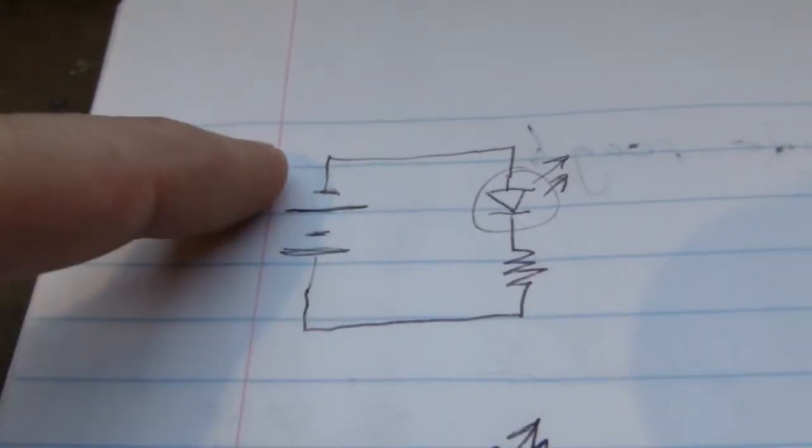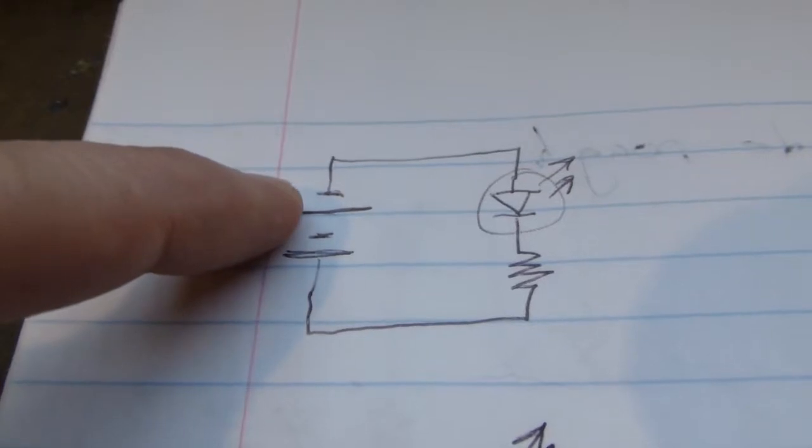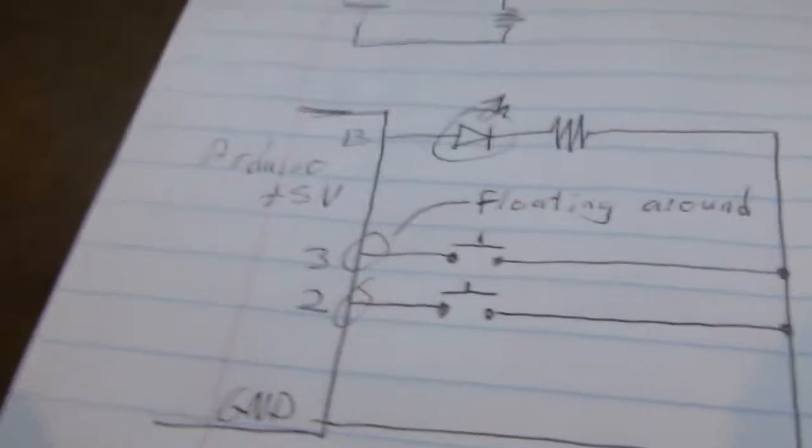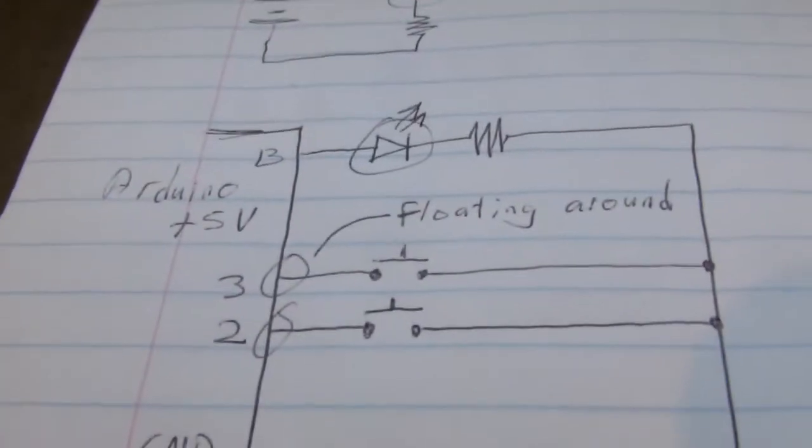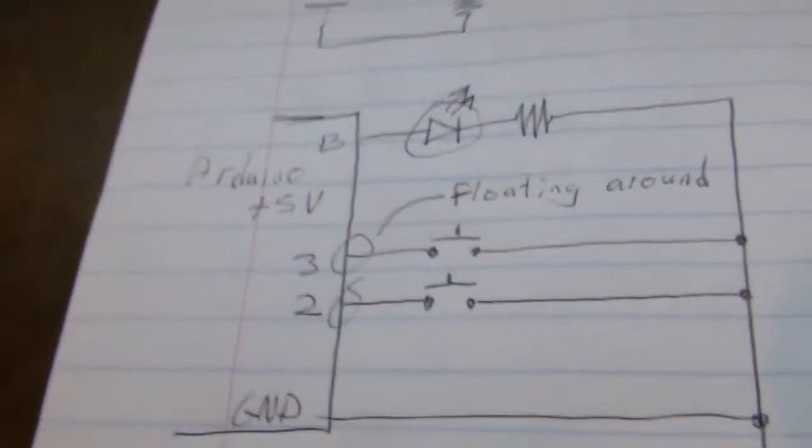This is a symbol that represents a battery or a voltage source of some sort. Now this is just simplistically how we are going to set up the circuit.